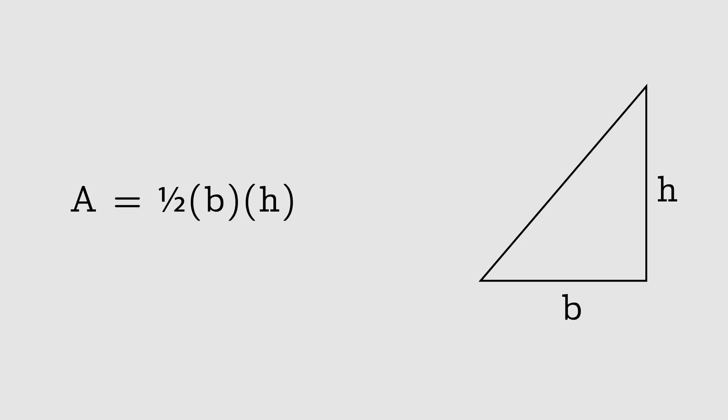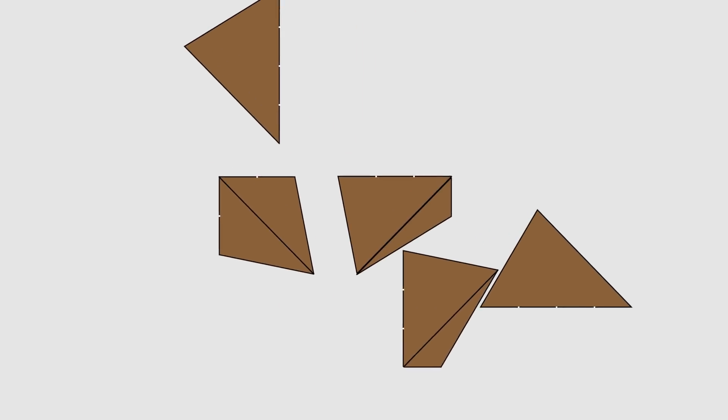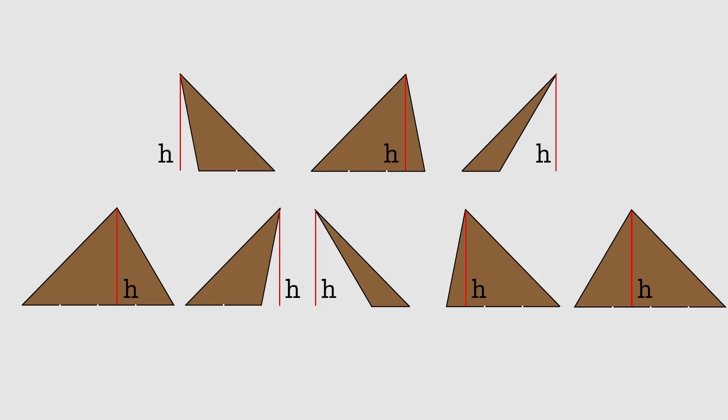Why does this work? The key trick depends on the formula for the area of a triangle: area equals one half base times height. For the regions that go around a corner, we can see how things work by making an extra cut. Now each person gets one or two triangles, all of which have the same height — half the square — and a total base of four segments, so each region must have the same area.